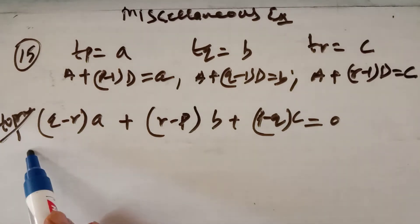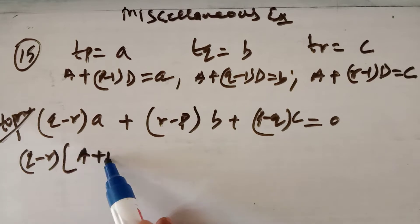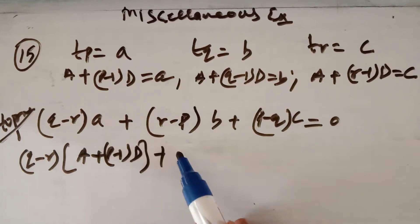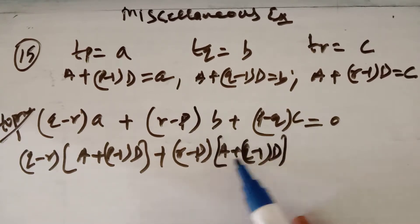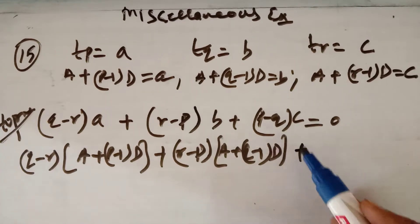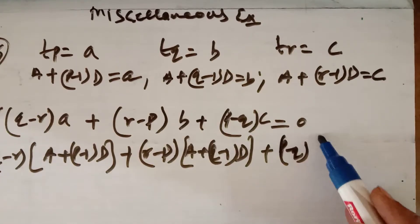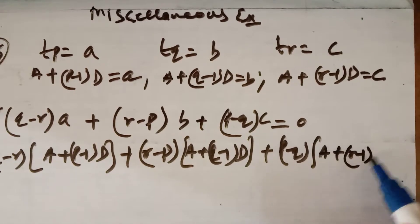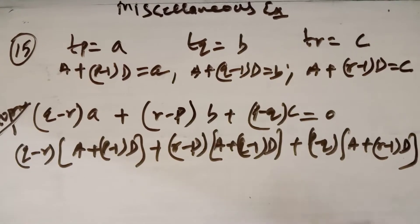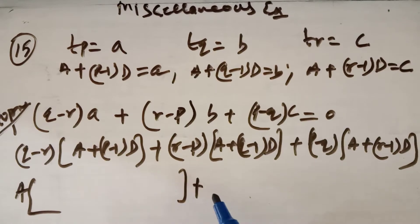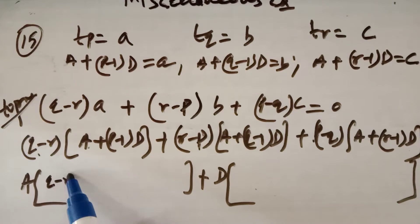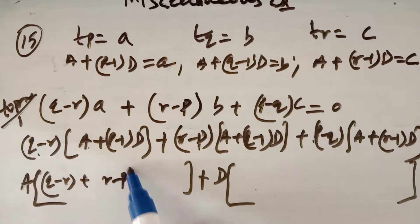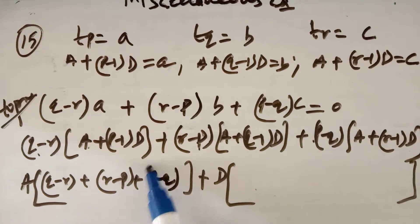Now replace these values. For (q−r), the value of a is A + (p−1)D; for (r−p), the value of b is A + (q−1)D; and for (p−q), the value of c is A + (r−1)D, and you have to prove that it equals 0. Collect the terms containing A: that gives (q−r) + (r−p) + (p−q), which sums to 0.